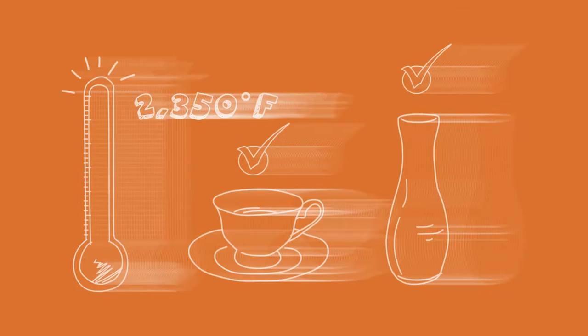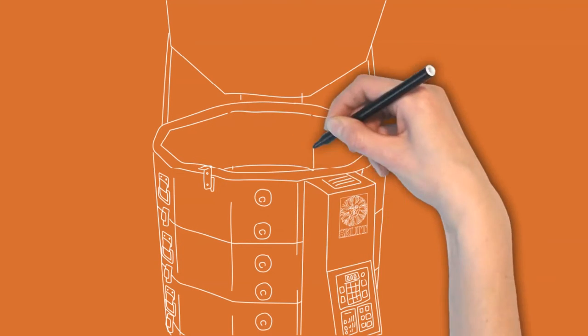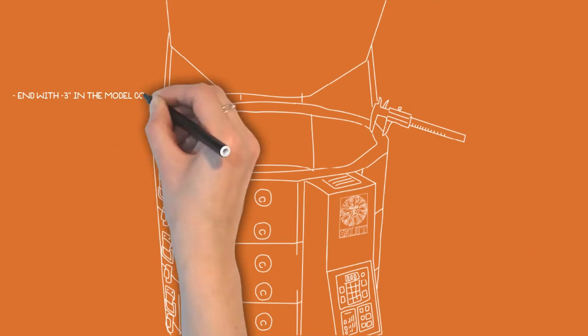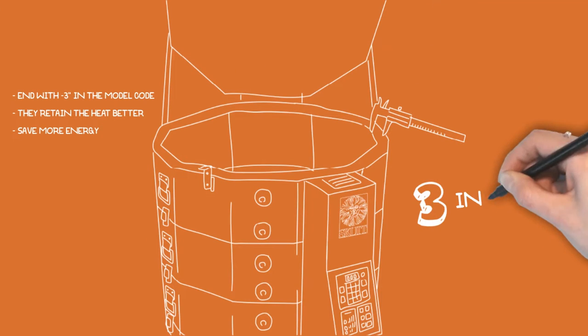On some models, it is an option to choose a 3-inch brick, which is thicker than the standard 2.5-inch brick. They end with a dash in the model name. The 3-inch walls retain the heat better and save more energy, but if you prefer to maximize the inner space, you can choose the 2.5-inch model.